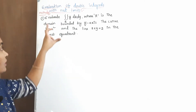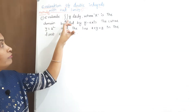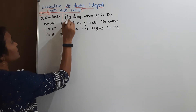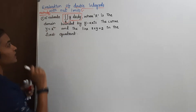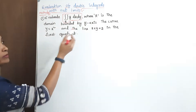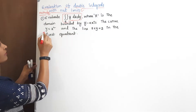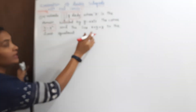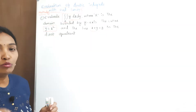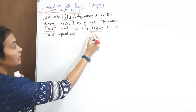Now in this class, before finding the limits, first you have to read the problem carefully. Here, evaluate the double integral of y dx dy, where R is the domain bounded by the y-axis, the curve y equals x squared, and the line x plus y equals 2, in the first quadrant. We have to find the bounded region depending upon the given data.